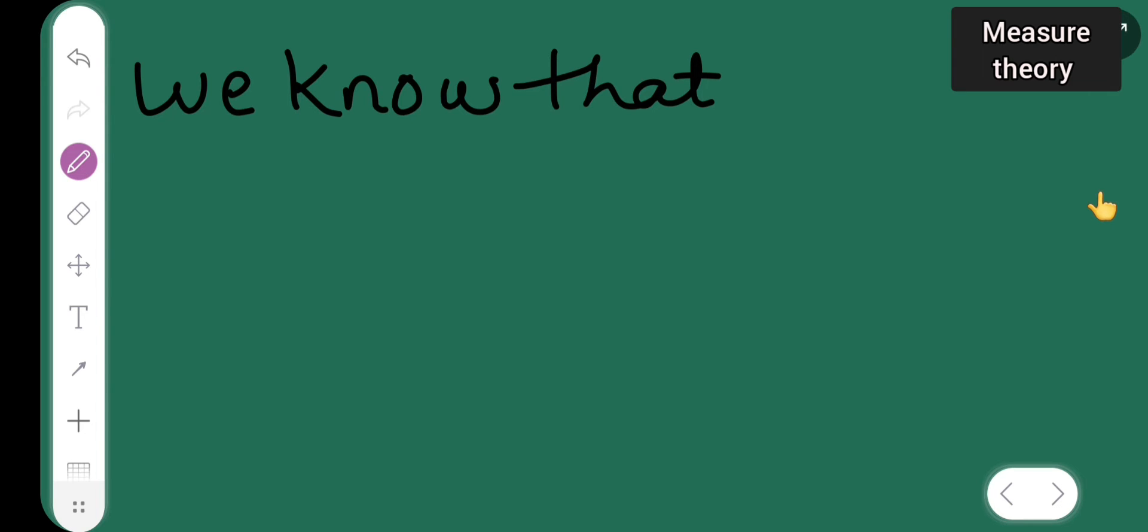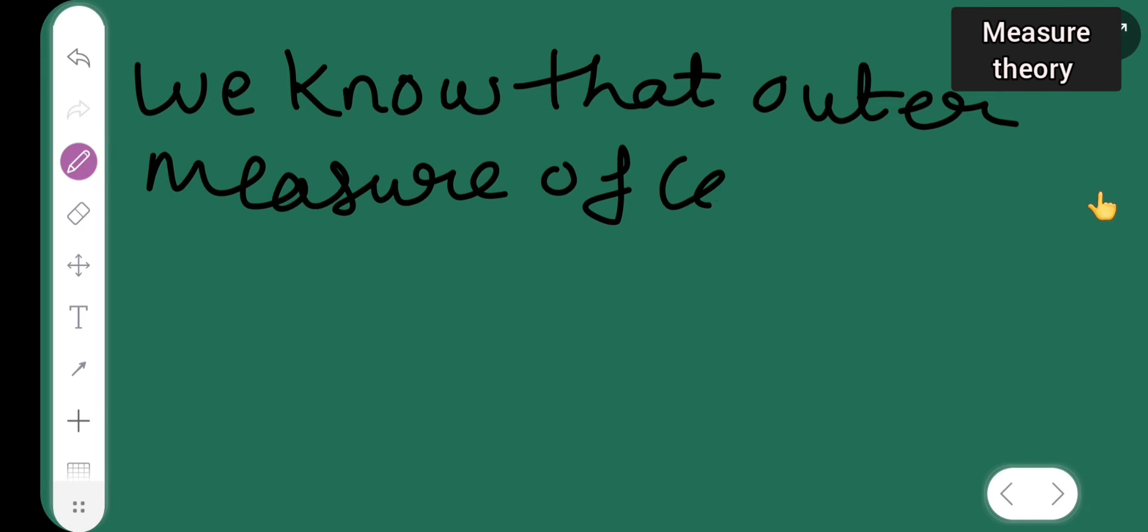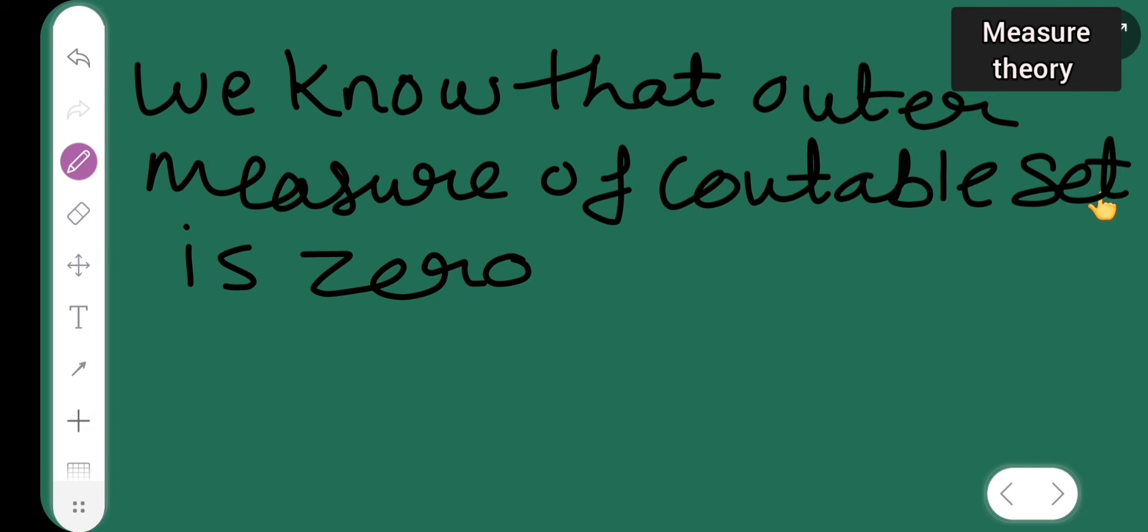The outer measure of a countable set is zero, which implies that the outer measure of this interval I is equal to zero. But the outer measure...